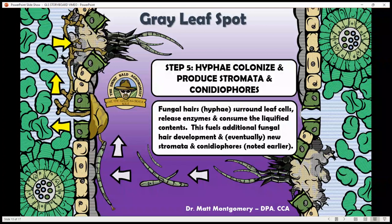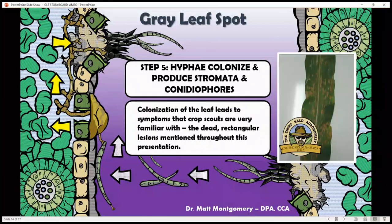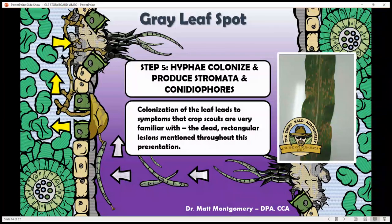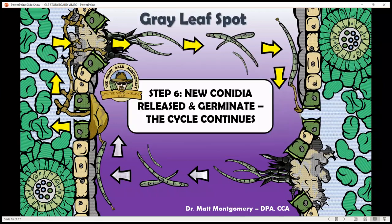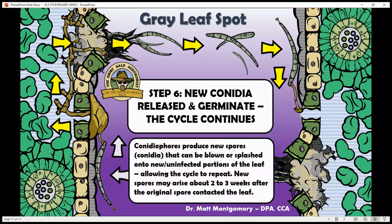Those fungal hairs devour the material, produce new fungal hairs that release more spores, and so on. From the period of time that the spore lands on the leaf to new spores being produced is about two to three weeks. The formation of those lesions takes maybe about ten days from the time the spore contacts the leaf to the actual development of those lesions. Then the cycle just repeats itself — and that's kind of the process we go through for Gray Leaf Spot.